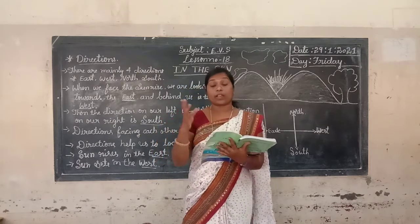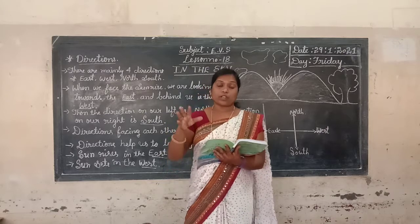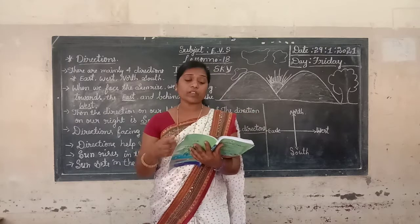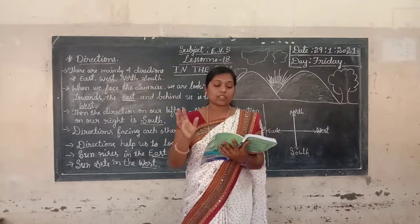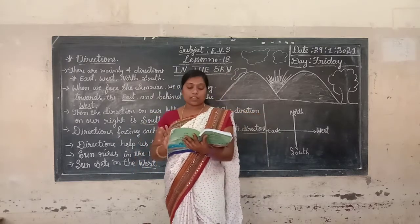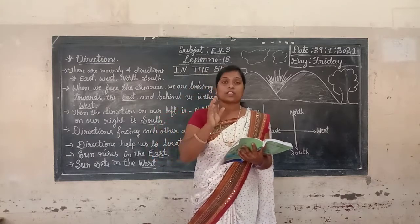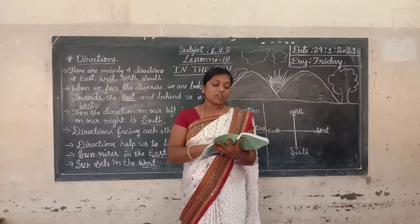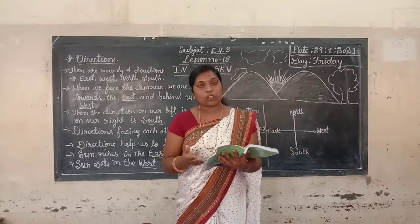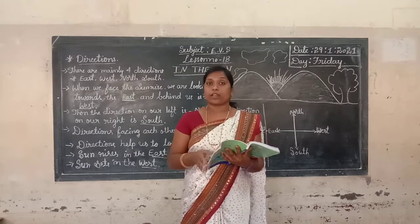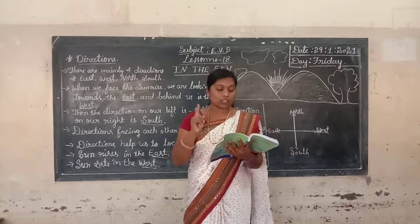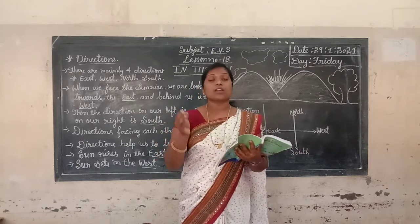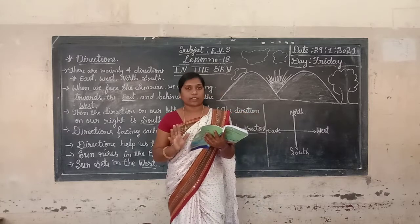Children, do not look at the sun with your naked eye — it is very dangerous. There are special spectacles prepared to see the sun. If you want to see the sun directly, use spectacles. Take the help of your teachers to see the sun through the use of spectacles.